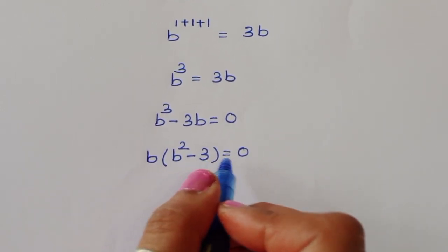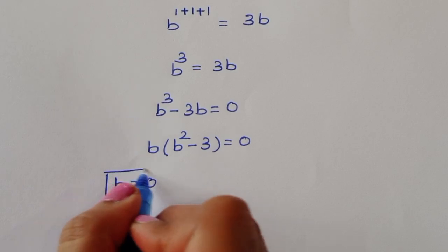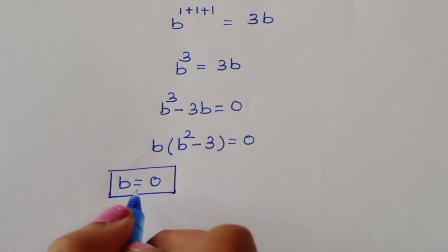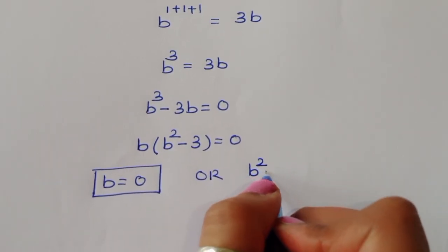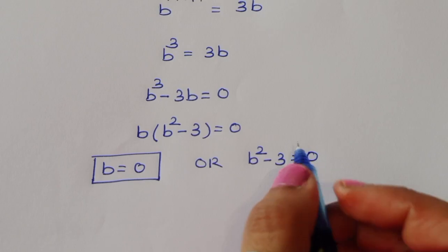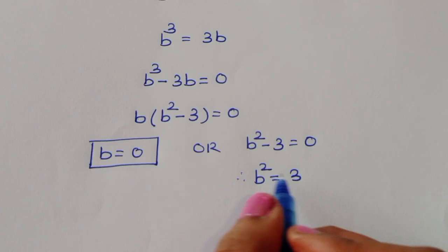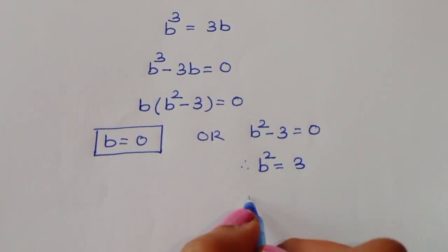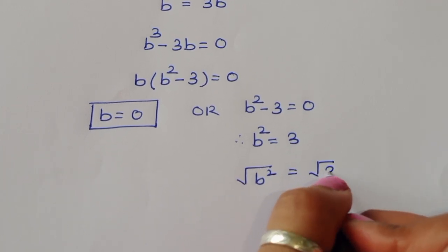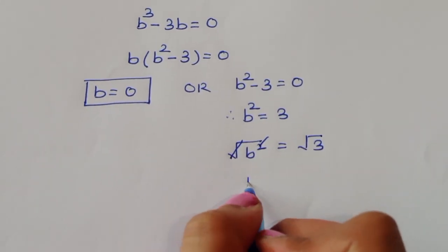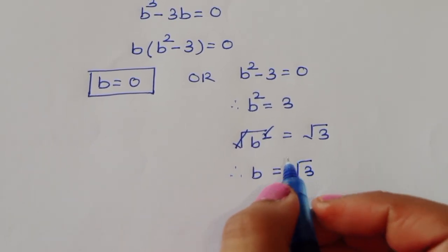We now have two equations: the first is b equal to 0, and the second is b squared minus 3 equal to 0. From the second equation, b squared equals 3. Taking the square root of both sides, the square cancels with the square root.